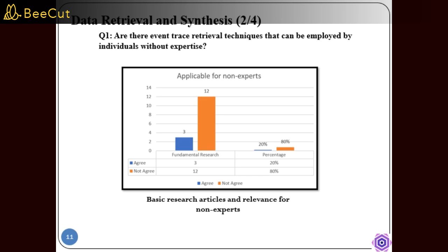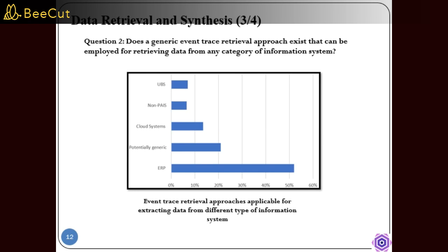The figure answers the question: does a generic event trace retrieval approach exist that can be employed for retrieving data from any category of information system? This shows the retrieval data that addresses this single research query. During data retrieval, event trace retrieval methodologies were observed and categorized based on diverse information system categories. The most frequently used methodologies focused on objects and data.